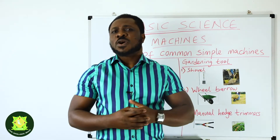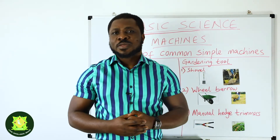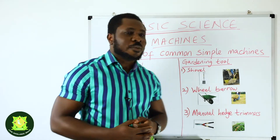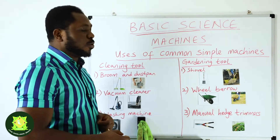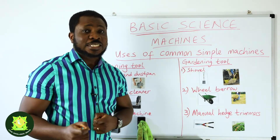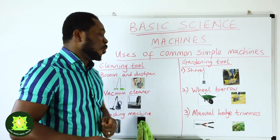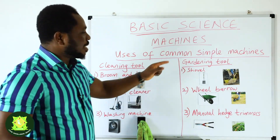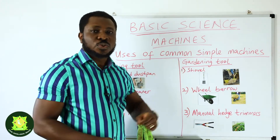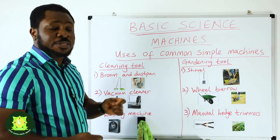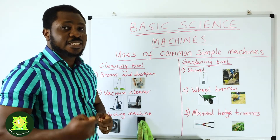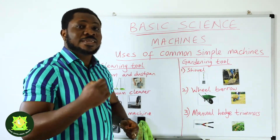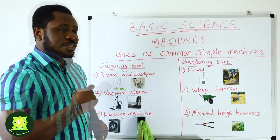So what are the machines you have in your home and how do you use them? Good examples of machines that we have in our home are the cleaning tools and the gardening tools — cleaning tools that make cleaning easy and gardening tools that make gardening easy.